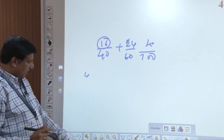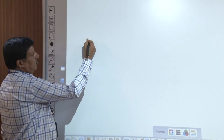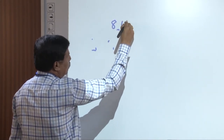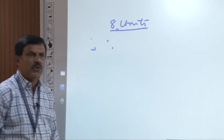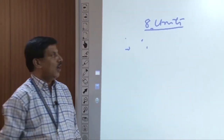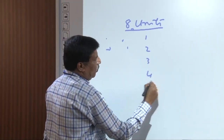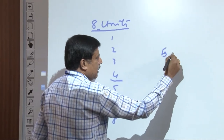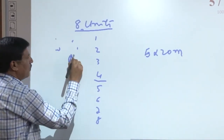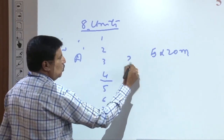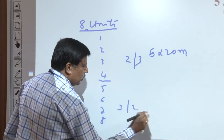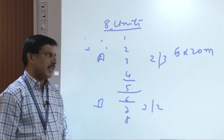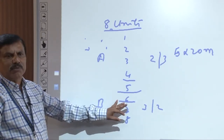Regarding the exam structure: up to 2015, subjects had 8 units or chapters. Students used to answer any 4 or 5 questions, each carrying 20 marks, split into Part A and Part B. Some colleges completed only 5 or 6 units, so students were able to score good marks regardless. VTU then changed this to a module-based system.